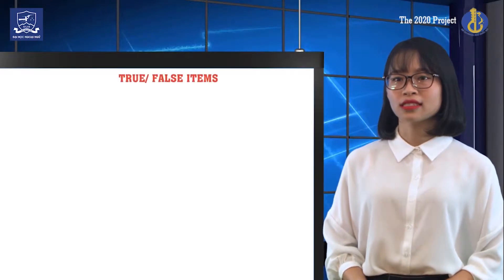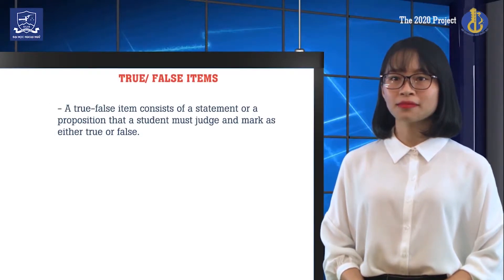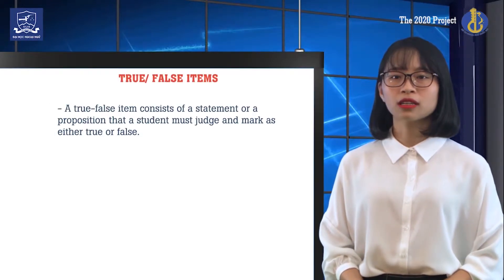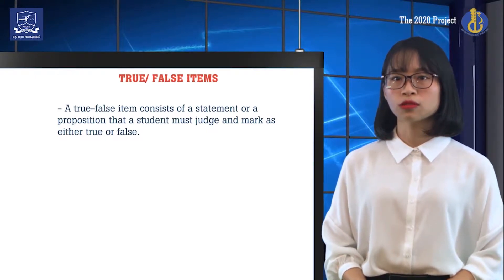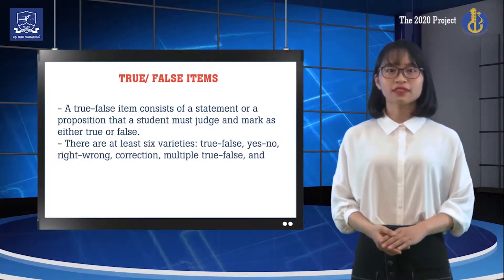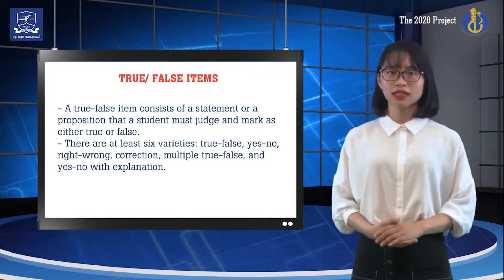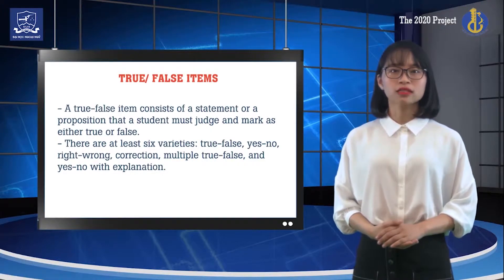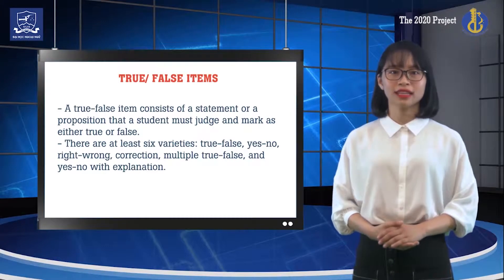As the name suggests, a true-false item consists of a statement or a proposition that a student must judge or mark as either true or false. There are at least six varieties, including true-false, yes-no, right-wrong, correction, multiple true-false, and yes-no with explanation.